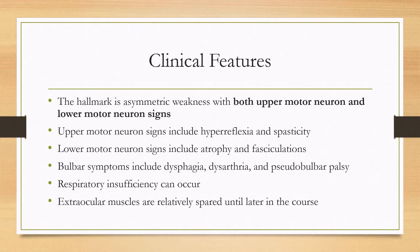The clinical hallmark is asymmetric weakness with both upper motor neuron and lower motor neuron signs. Upper motor neuron signs include hyperreflexia, such as a positive Babinski, or spasticity. Lower motor neuron signs will include atrophy and fasciculations.